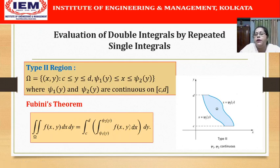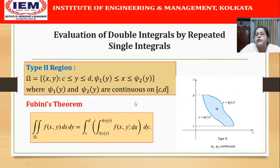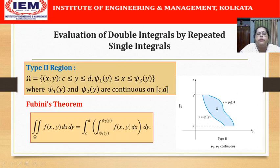This is the reverse of Type 1. Remember that in a Type 1 region we first vary y, taking a vertical strip, whereas in a Type 2 region we first vary x, taking a horizontal strip. This is very important to remember for correct understanding.